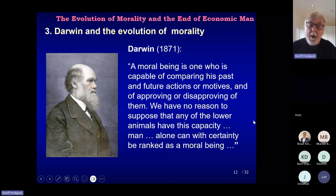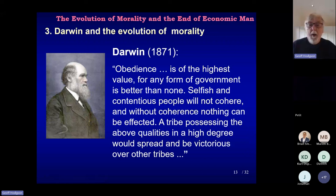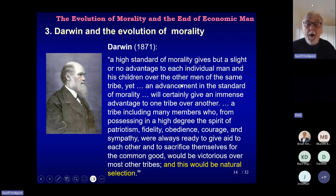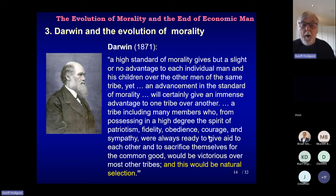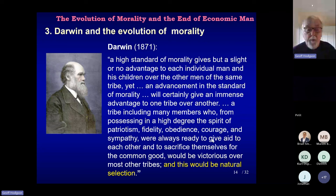Then he talks about structures and rules within groups: 'Obedience is of the highest value — any form of government is better than none. Selfish and contentious people will not cohere, and without coherence nothing can be effective. A tribe possessing the above qualities in a high degree would spread and be victorious over other tribes.' And particularly about morality itself: 'A high standard of morality gives but a slight or no advantage to each individual man and his children over other men in the same tribe' — in other words, the advantage is not to the individual to be altruistic or moral, but the advantage is to the group.